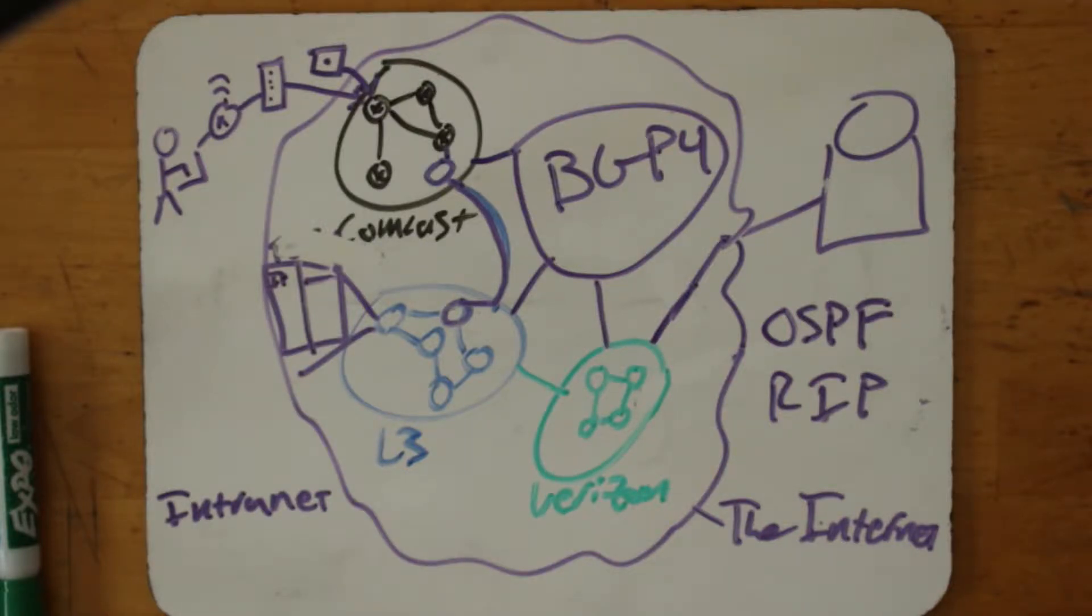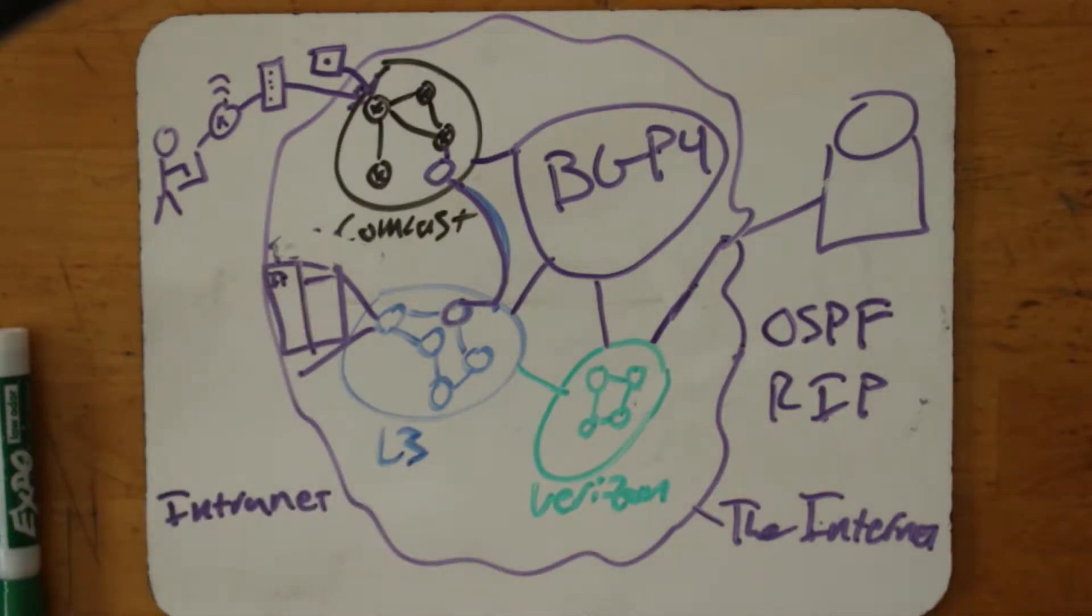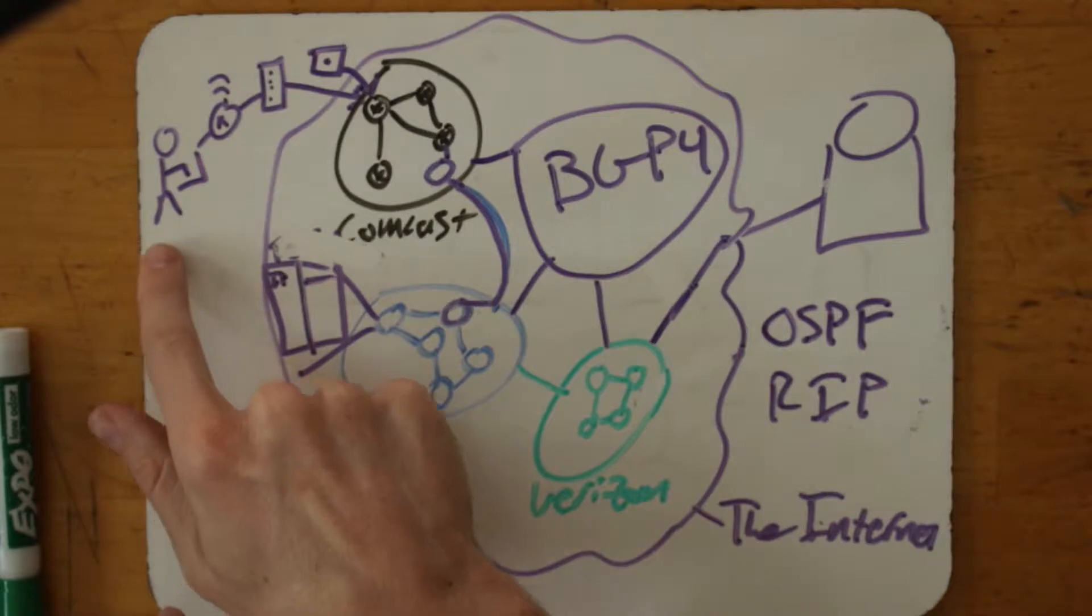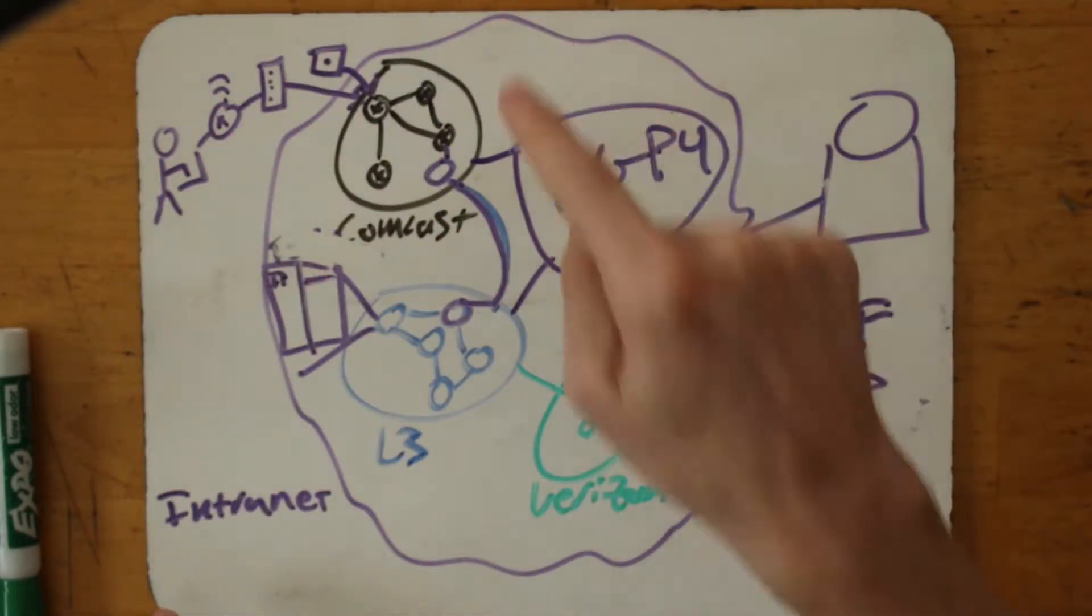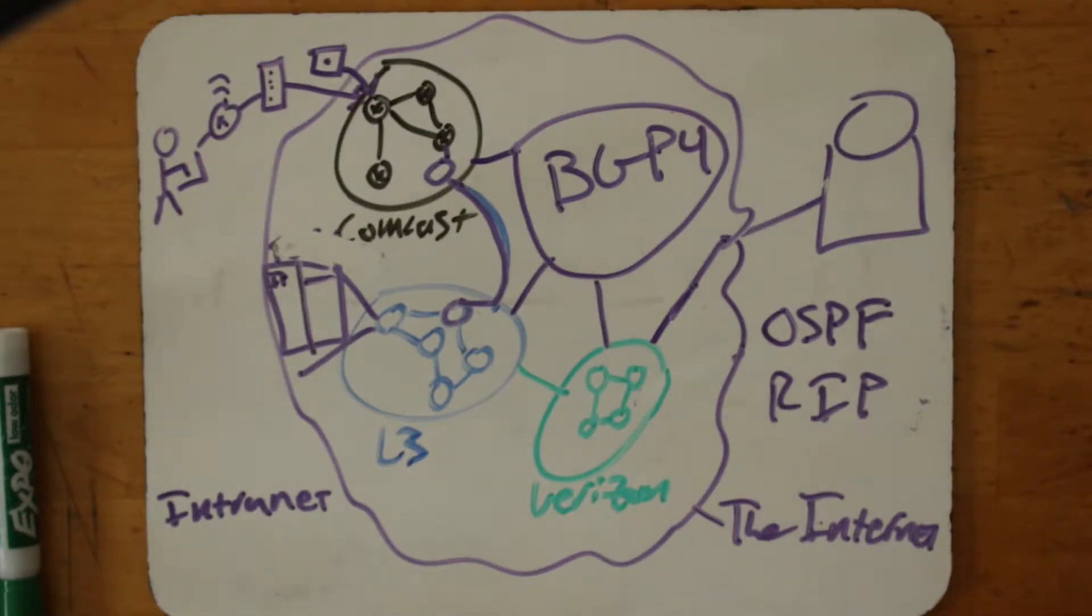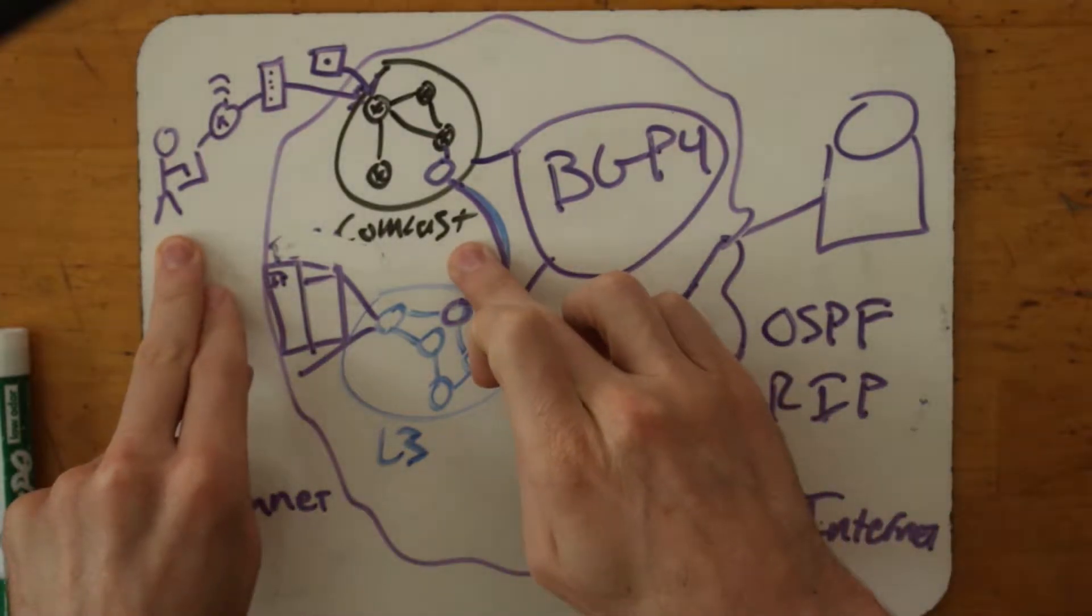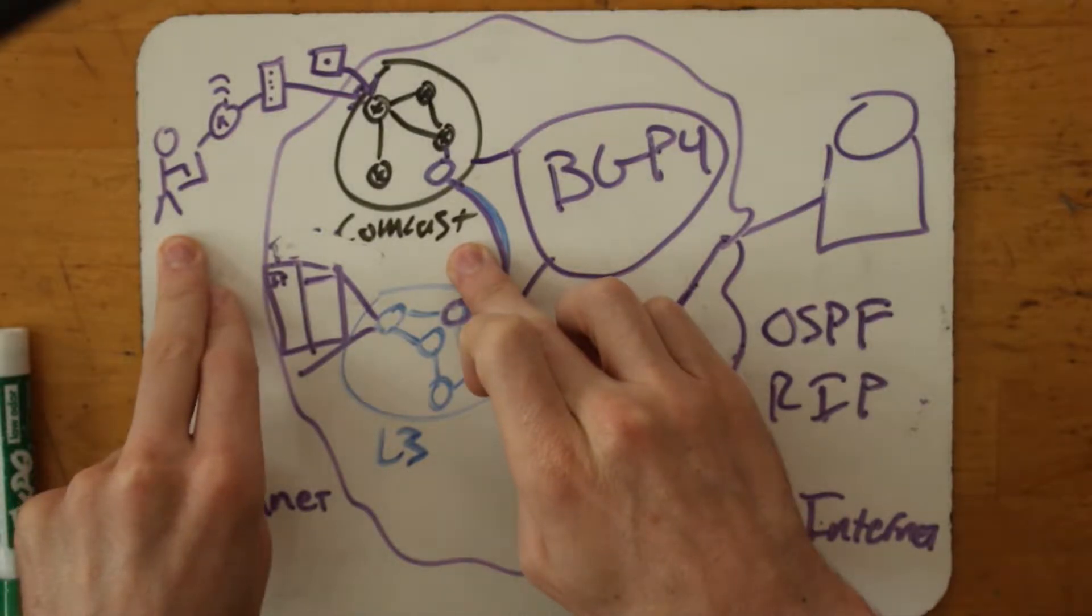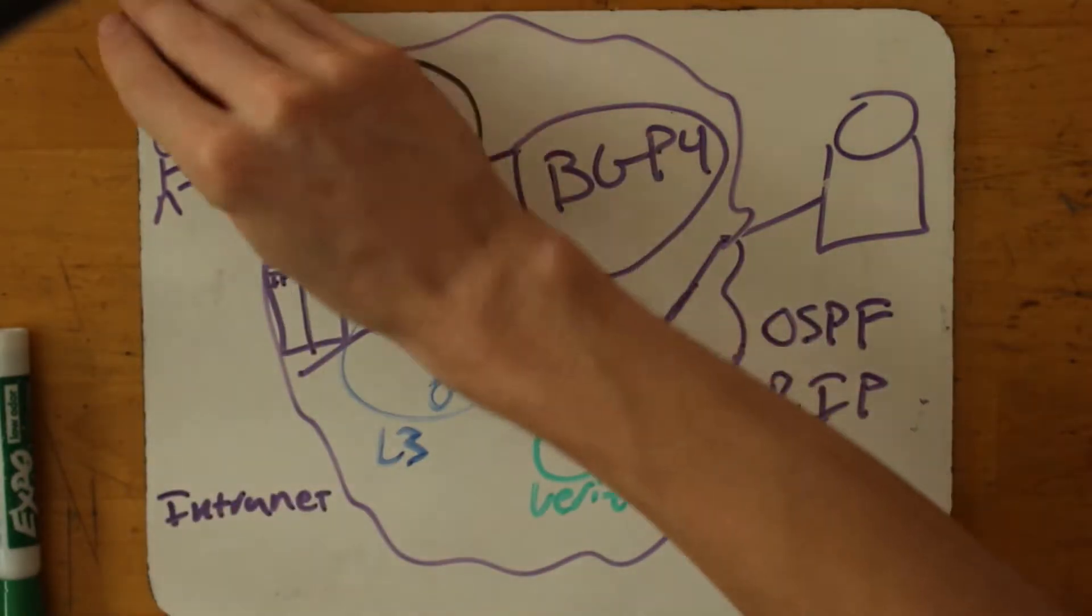So we've talked about routing tables and we've mentioned now an IP address. I want to zoom in for the next section on this area of our chart, the communication that happens between me and my ISP, which is Comcast in this example, before I can be said, this computer over here can be said to be connected to the internet. So let's zoom in on this section of the graph.